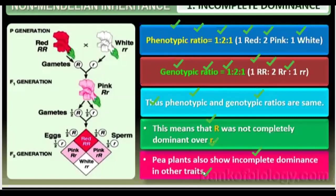Mendel was lucky to carry the 7 characteristics — with gravity characteristics, he had taken the same ones without any type of incomplete dominance or deviation. Pea plants also show incomplete dominance in other traits. Let's read about co-dominance.